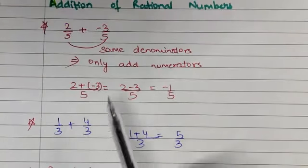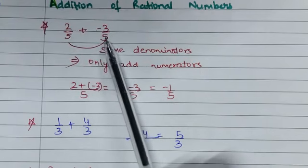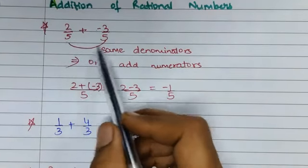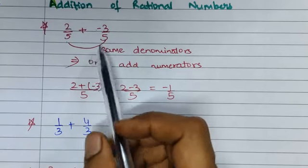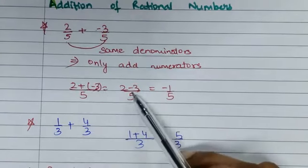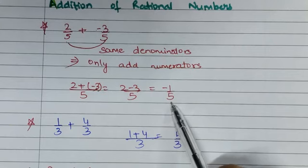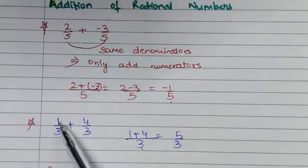Next we have addition of rational numbers. Let us discuss the first case: if the denominators are the same, just add the numerators. For example, 2 plus minus 3 over the same denominator gives 2 minus 3 equals minus 1, with the denominator remaining the same. And 1 upon 3 plus 4 upon 3: the denominator is same, so simply add the numerators to get 5 upon 3.